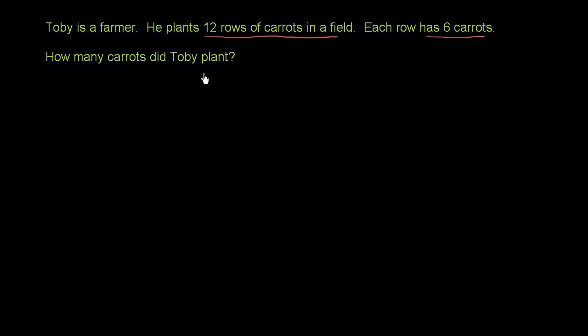So let's try to visualize this thing. They tell us each row has 6 carrots. Let's try to visualize a row.